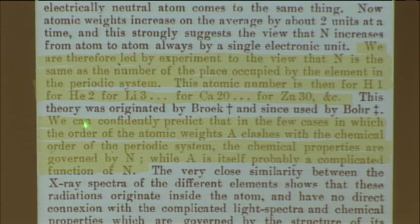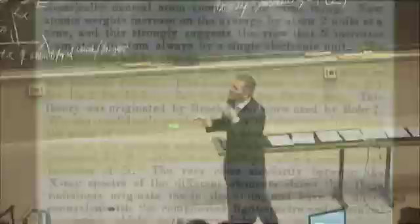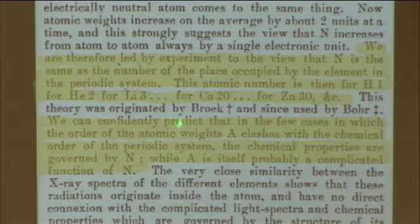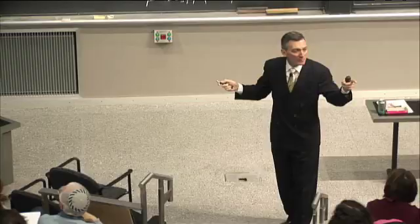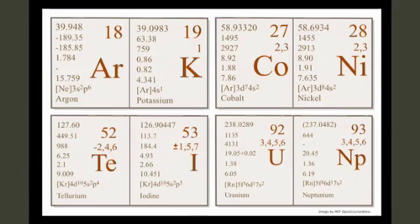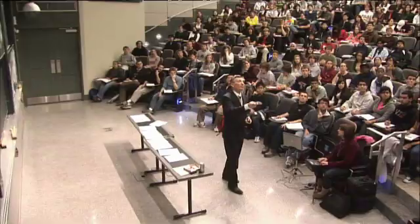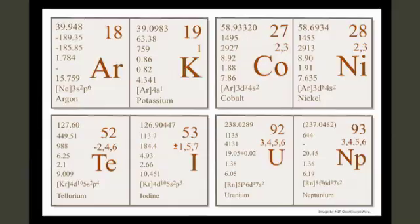We are led by experiment to view that n, we use the letter Z today but he used capital N, is the same as the number of place occupied by the element in the periodic system. This atomic number, for the first time the term is used. We can confidently predict that in cases where the order of atomic weights clashes with the chemical order of the periodic system, the chemical properties are governed by n while atomic weight is probably a complicated function of n. He's right.